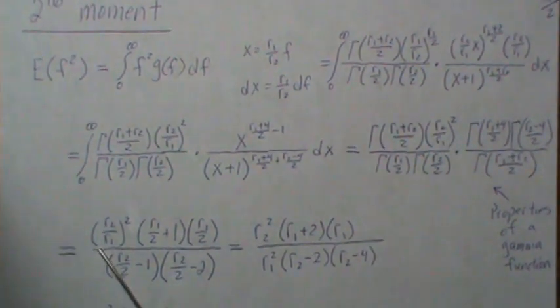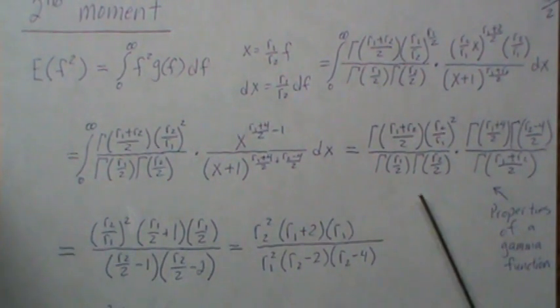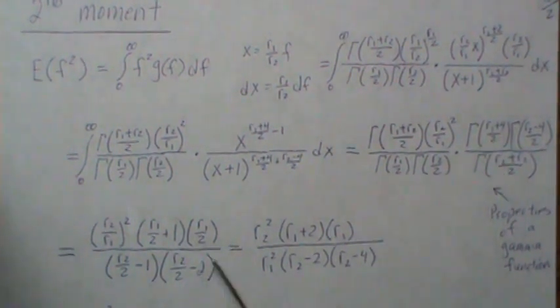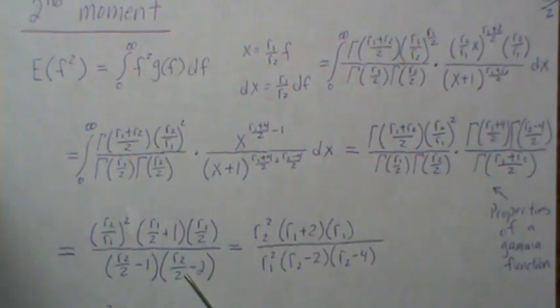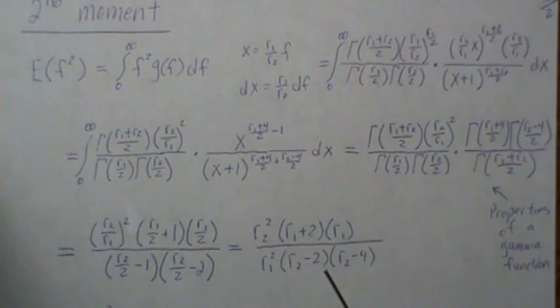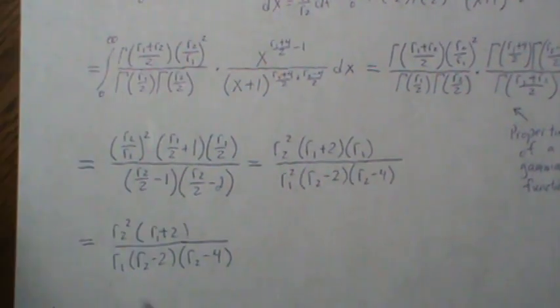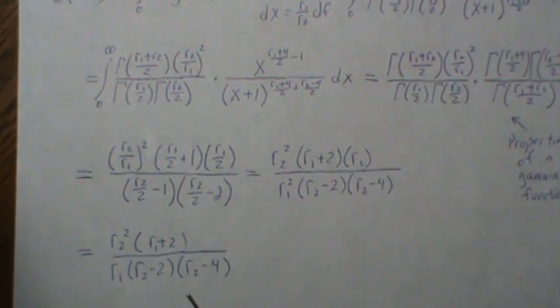So the r2 squared comes here, and then this goes into here, but leaves this piece and this piece. And then this one goes into there and leaves those two pieces. And then that reduces to this. And then it becomes this. So this is the second moment.